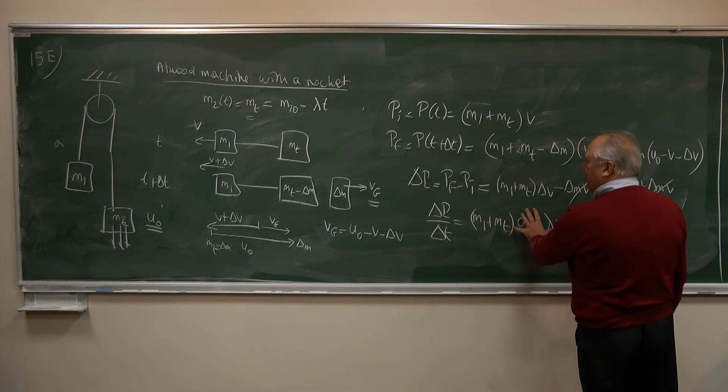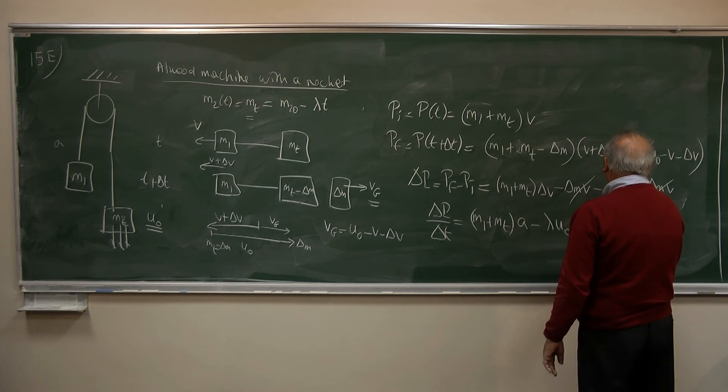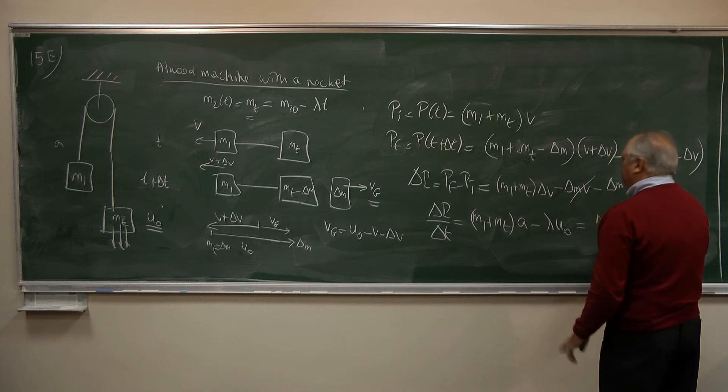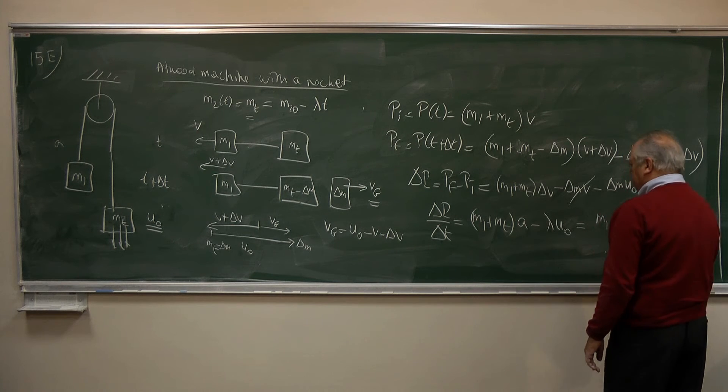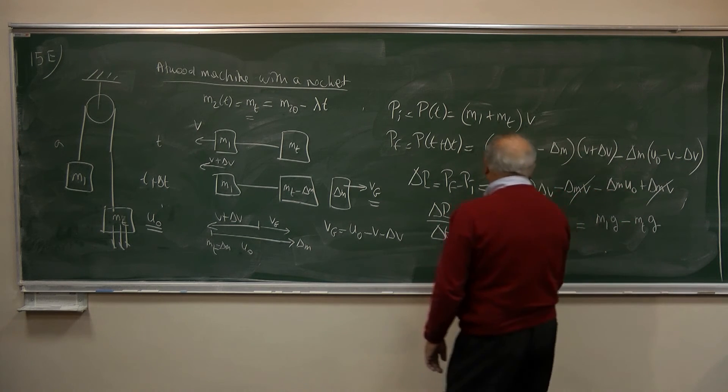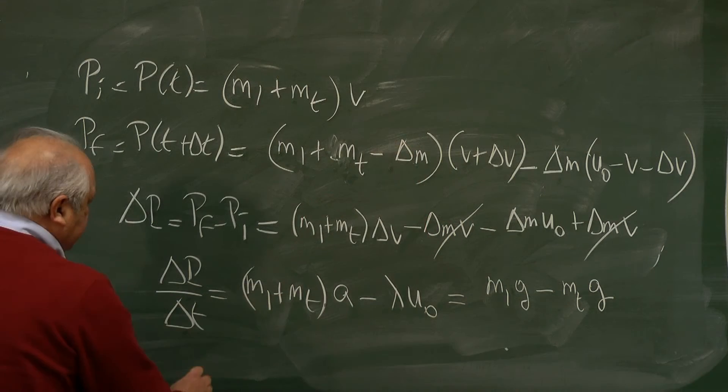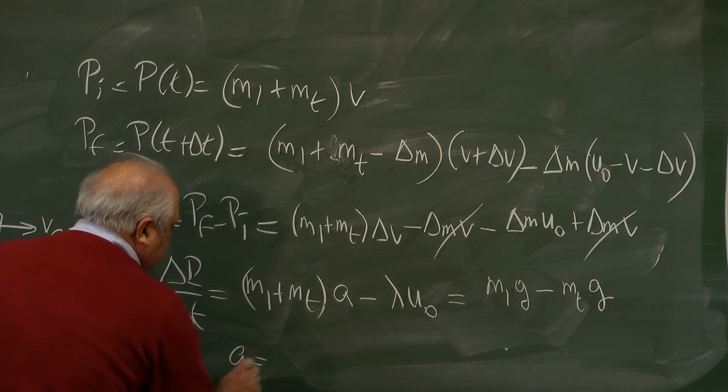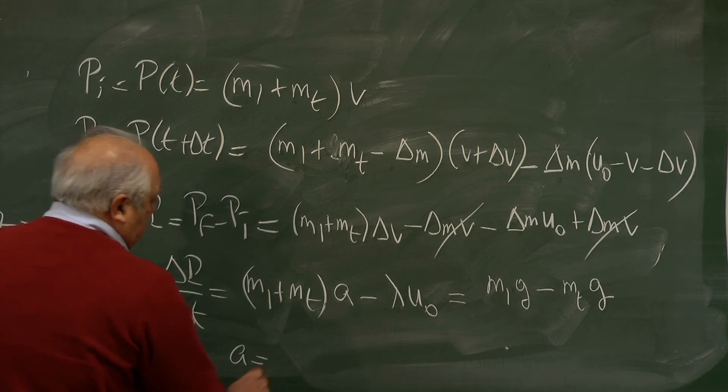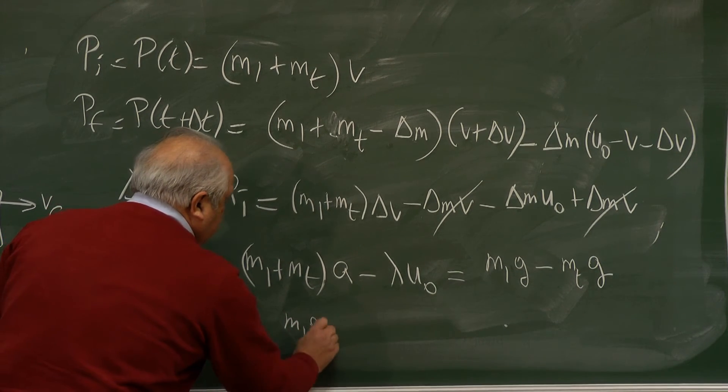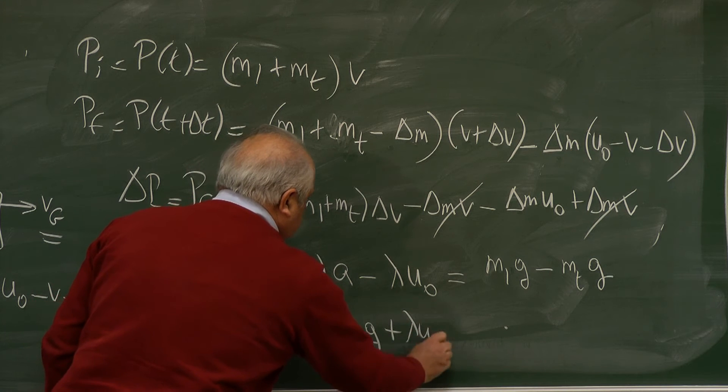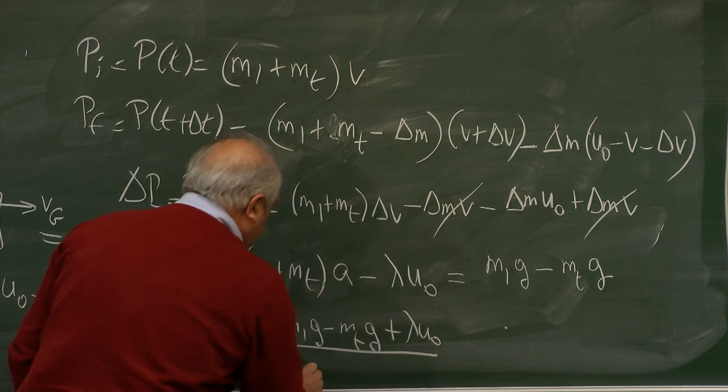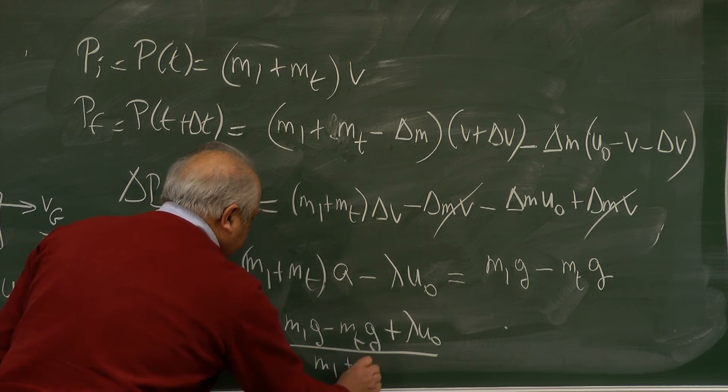This is the change in the momentum. This is M1g, the force that pulls to the left, minus MTg. We simply write A from here. A is equal to M1g minus MTg plus lambda U zero divided by M1 plus MT.